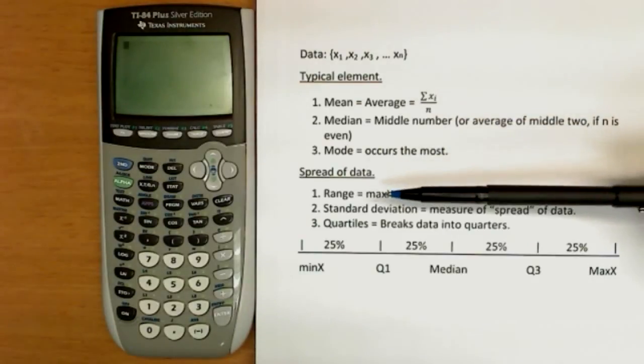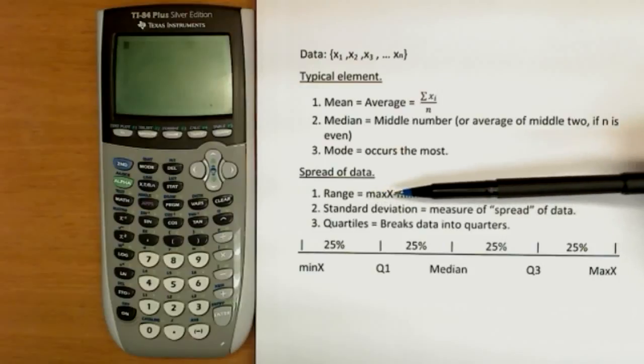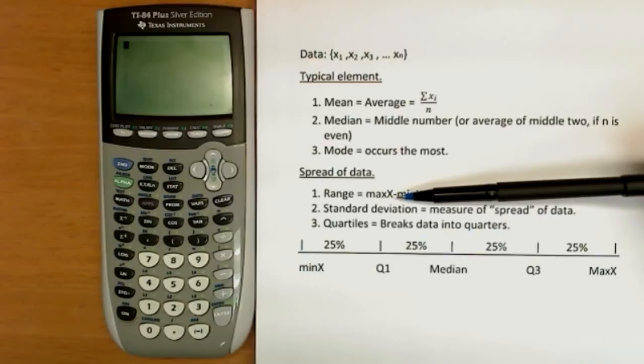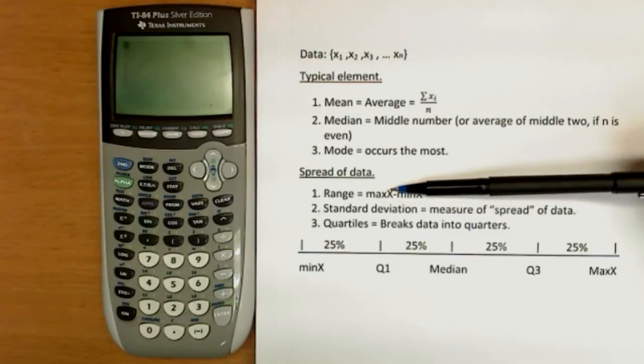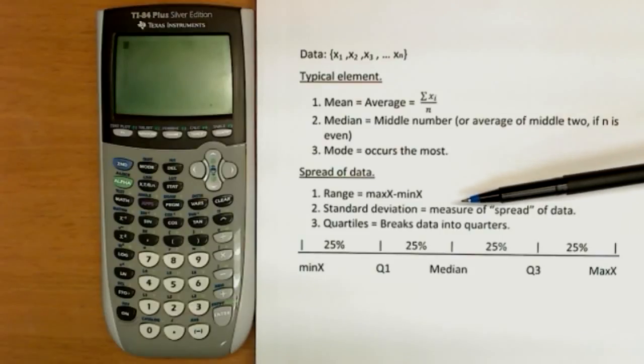One is the range. This is a little different than range in algebra, where range was the set of all possible numbers you get out of a function. Our range is the maximum minus the minimum. So we actually do a subtraction here. If the max test score was a 98 and the minimum was a 60, you would make 98 minus 60 and actually get the number 38 as your answer for the range.